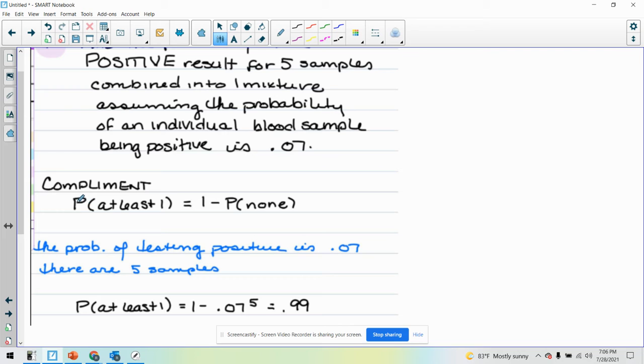It says you want the complement. Great. The probability of at least one is equal to one minus the probability of none. So this is the same thing as saying the probability of all being negative. Non-positive means the same thing as all negative.